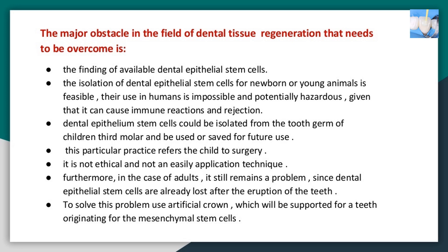The major obstacle in dental tissue regeneration is finding available dental epithelial stem cells. Isolation from newborn or young animals is feasible, but their use in humans is impossible and potentially hazardous due to immune reactions and rejection. Dental epithelium stem cells could be isolated from the tooth germ of children's third molars, but this requires surgery on the child, which is not ethical or easily applicable. In adults, dental epithelial stem cells are already lost after eruption of the teeth.